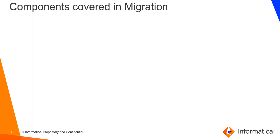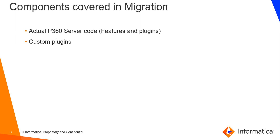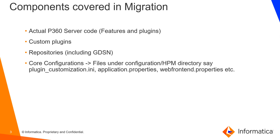Coming to the first topic of components that are covered in migration. Looking at the P360 server core component, we are going to cover the actual server code like features and plugins as part of the migration. Custom plugins are also covered, transferring from dev environment to QA and then QA to prod subsequently. The data model, which includes repositories including the GDSM data model, is also covered. Core configurations for P360 server such as plugin INI file, application properties, web internet properties, and web definition files related to the web client available at the configuration HPM directory will also be migrated.